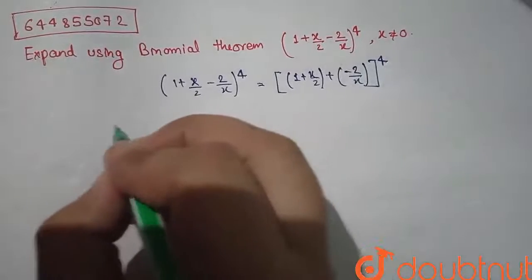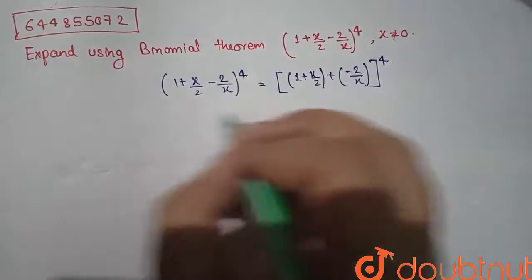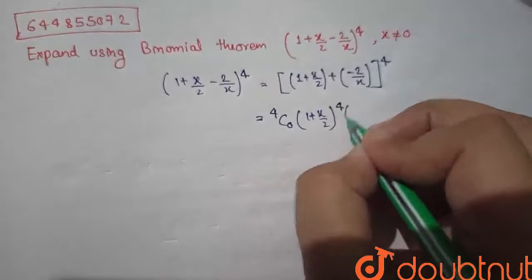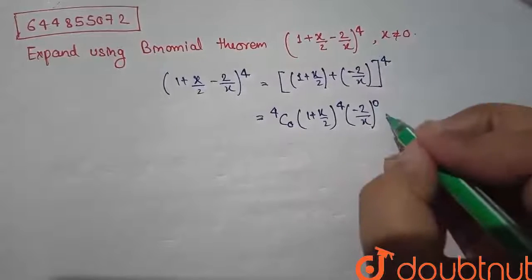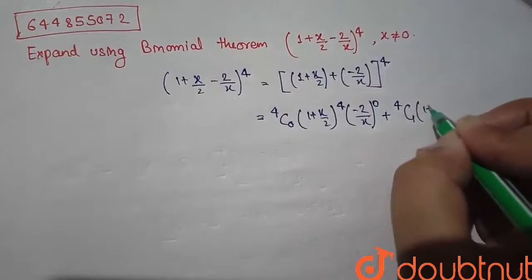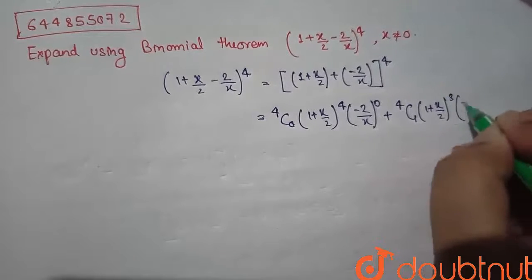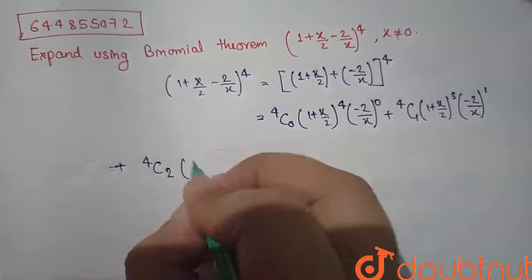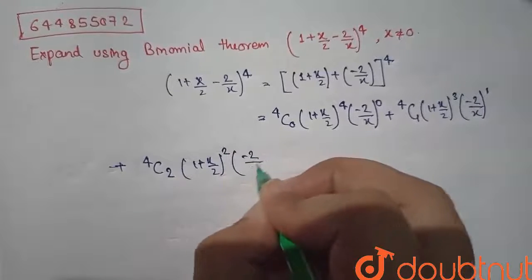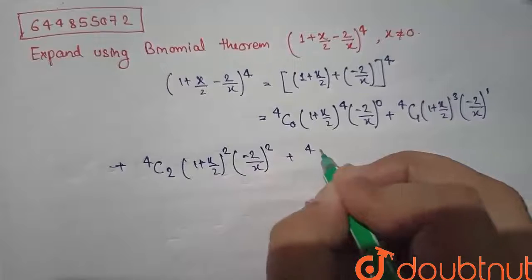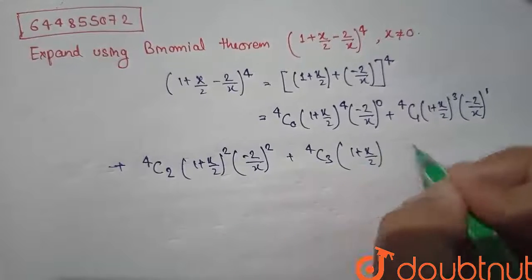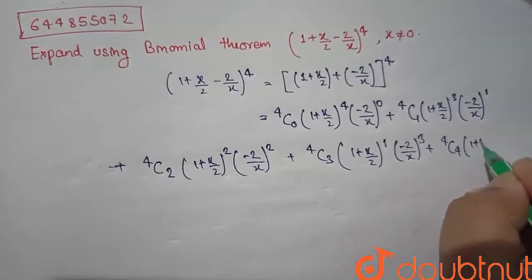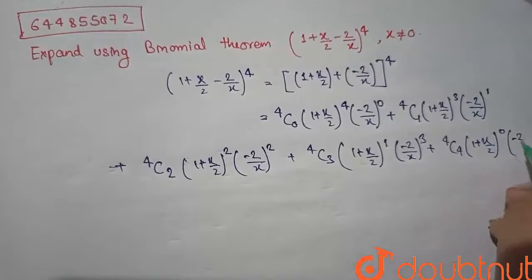Now to expand it, we write it as: 4C0 · (1 + x/2)^4 · (-2/x)^0 plus 4C1 · (1 + x/2)^3 · (-2/x)^1 plus 4C2 · (1 + x/2)^2 · (-2/x)^2 plus further terms up to power 4.